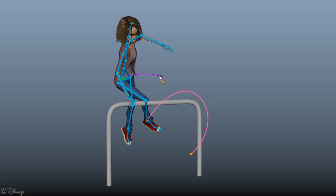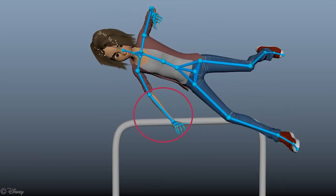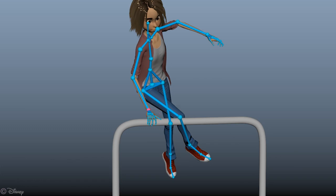More constraints can be added directly on the curve for finer editing. Once again, no keys are added during manipulations. Instead, the tangents of interpolation are optimized. A joint can also be set as contact to ensure that it will not move during a certain time range.